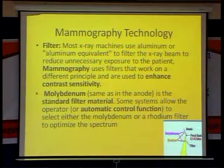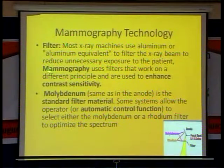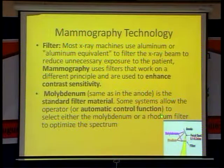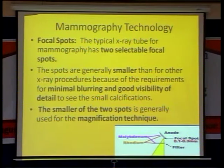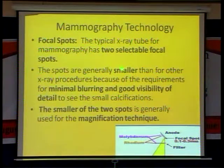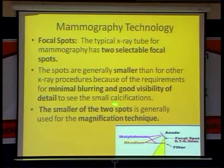Next is the filter. Usually in general radiology we use aluminum or aluminum equivalent filters, whereas in mammography we use a different principle — molybdenum is used as the filter material. Sometimes in automatic control function, we use rhodium also as a filter. The focal spot is 0.1 to 0.3 mm, with two selectable focal spots: a smaller focal spot for minimal blurring and good visibility of detail, used in mammography.